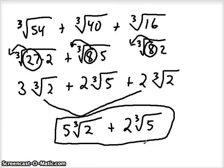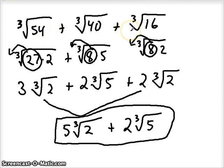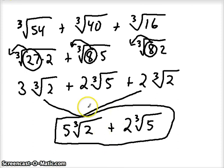So again, in order to add or subtract, we need the same index and we need the same radicand. As long as we have that, we can go ahead and combine their coefficients, as long as they're like terms. If we can't, we can only simplify and rewrite everything in its most simplified form. Good luck adding and subtracting radicals!